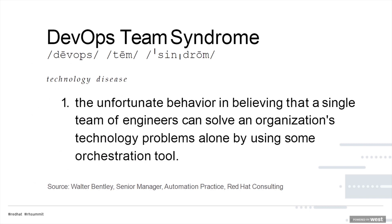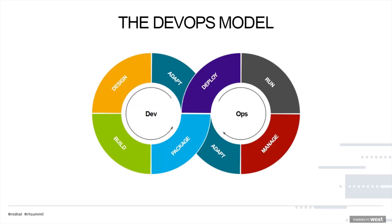There's a term created by one of our consultants, Walter Bentley, which is an interesting construct. It describes a flawed way of organizing: someone wants to buy a DevOps tool so their organization can "be DevOps." It fits into the unfortunate belief that a single team of engineers can solve organizational technology problems alone by using some single orchestration tool. There's more to it than tooling — tooling can obviously help a lot, but it's a combination of the people and the tooling.